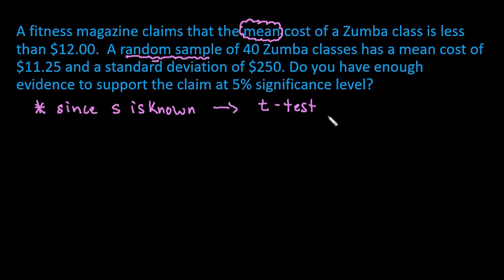Most of the time when we're doing a test for the mean, we use a T-test because most of the time we only know the sample standard deviation and we don't know the population standard deviation. If you knew the population standard deviation, then you would run a Z-test. But since we have a sample standard deviation, this is our S-value of $250, that tells us we're going to use a T-test.